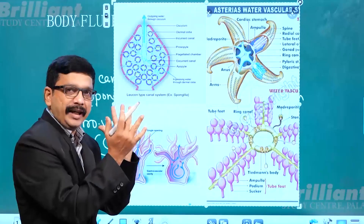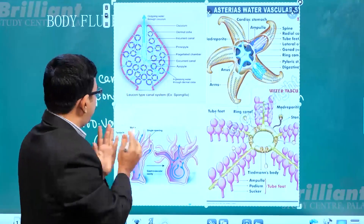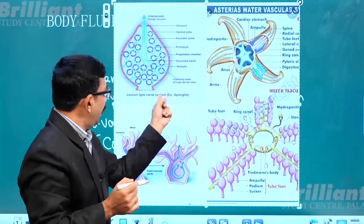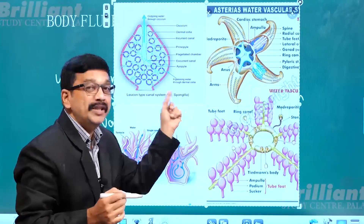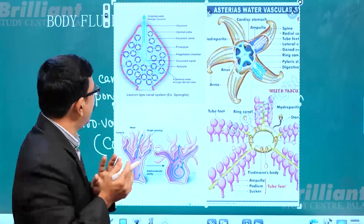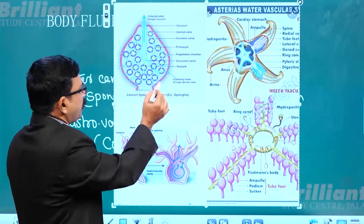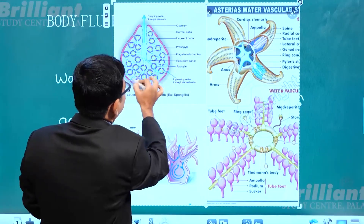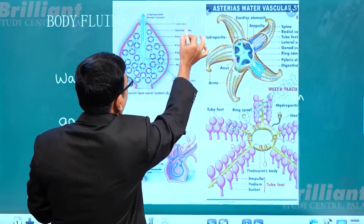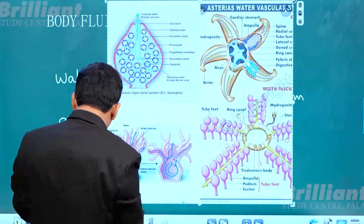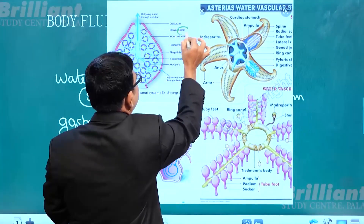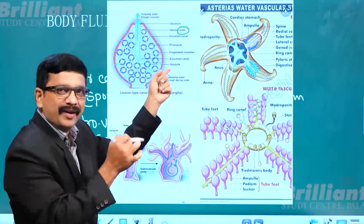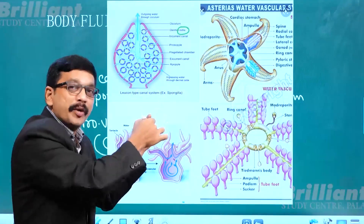Imagine this is a sponge — a leuconoid type of sponge called Spongilla. In sponges, you can observe many surface openings on the body. Those openings are called ostia.